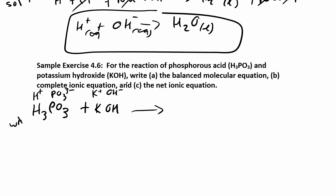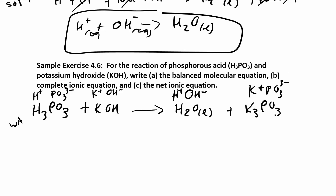Partial dissociation means if you put a hundred of these molecules in water, maybe only one or two actually dissociate into ions. So let's figure out what products form. On the reactant side I have H+, K+, OH−, and PO3 3−. Crisscrossing gives HOH (which is H2O, liquid) and K3PO3. H3PO3 is soluble, KOH is soluble, and K3PO3 — we don't have rules about phosphites, but potassium is always soluble, so this is soluble as well.